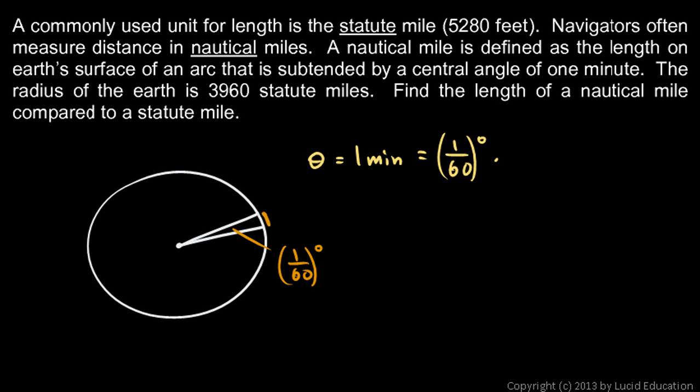And let's multiply by two pi radians per 360 degrees. Remember, two pi radians is one lap, that's the same as 360 degrees, so the degrees here will cancel out, and I'll have a certain number of radians. So take one sixtieth times two pi, and divided by 360, and we get 0.000291 radians.